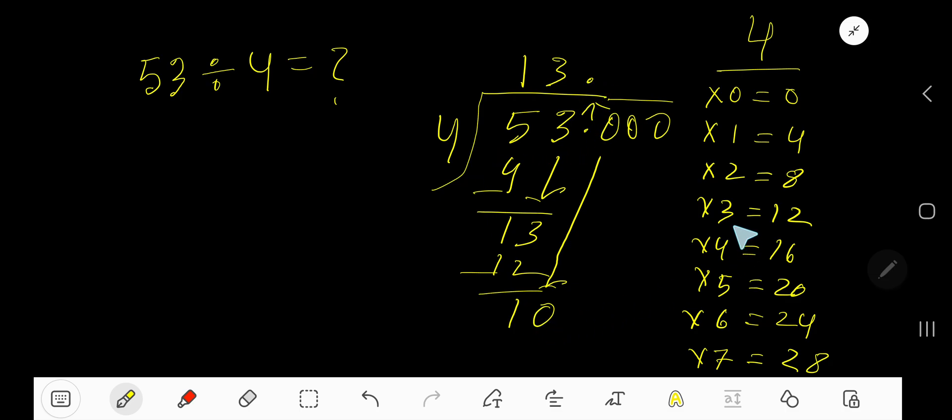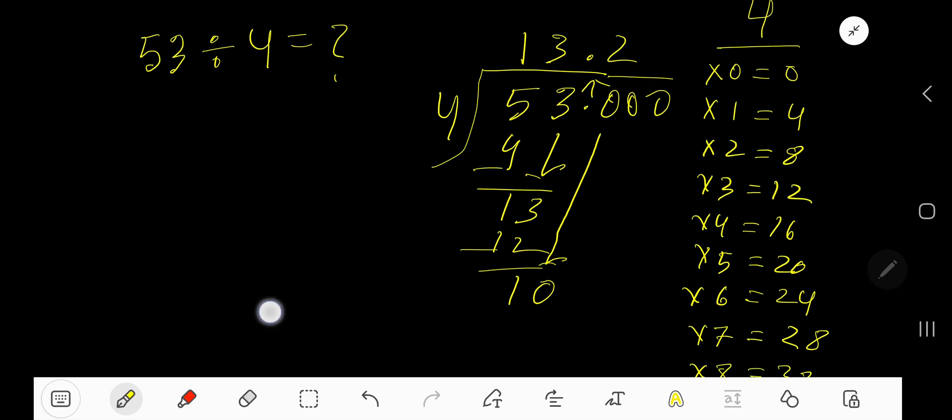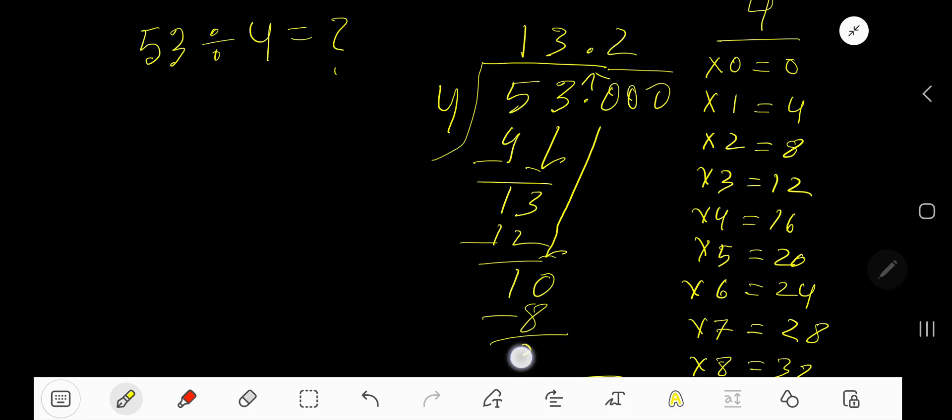4 goes into 10 how many times? 3 times 12 is too much, so 2 times. That gives you 8. 2 times 4 is 8. Subtract to get 2.